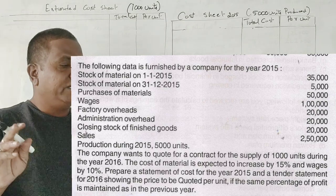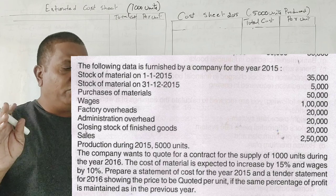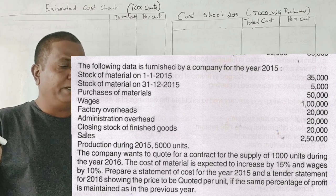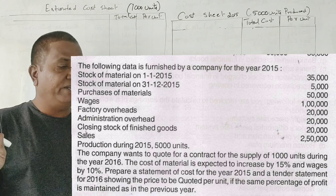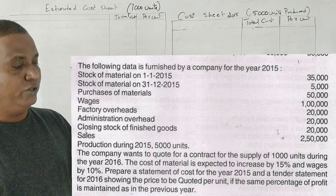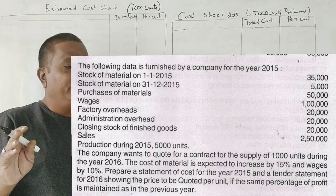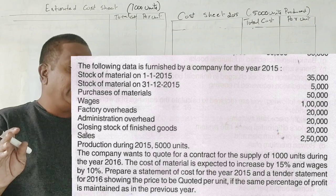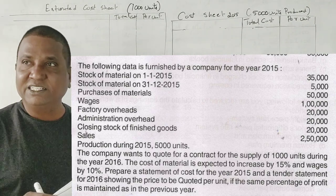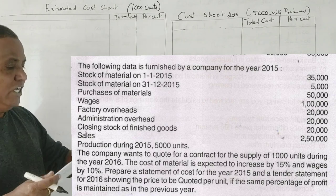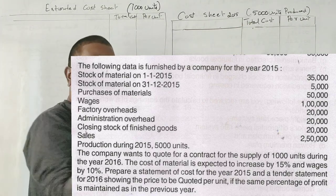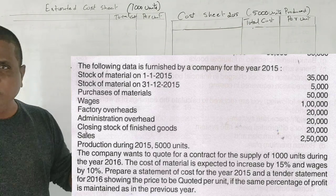The cost of materials is expected to increase by 15%, wages by 10%. Prepare a statement of cost for 2015 and a tender statement for 2016 showing the price quoted per unit if the same percentage of profit is maintained as in the previous year. When you are preparing this, the direct materials cost is not directly given.